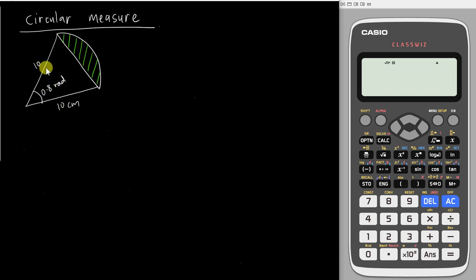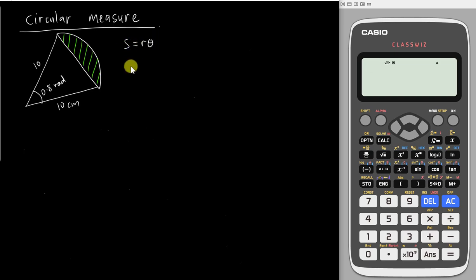But you need to pay attention — for this topic, the angle must always be in radian. So if your angle is in degree, you need to change it to radian. One of the reasons is both of these formulas — s = rθ and A = ½r²θ — are designed for θ in radian only.